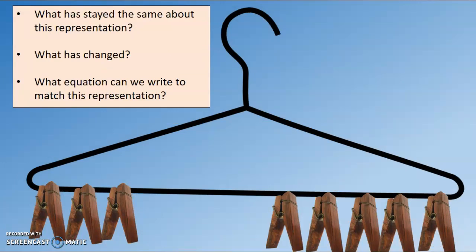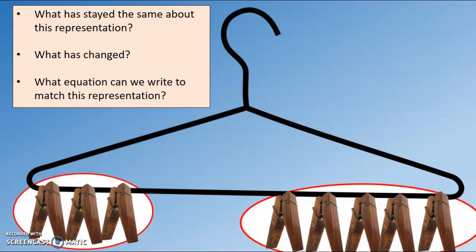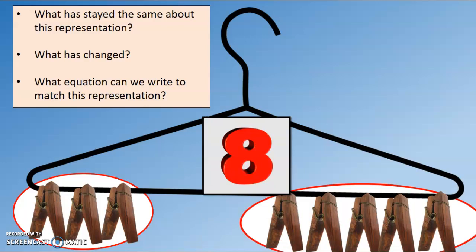So now what has stayed the same about this representation? What do you notice that is the same? Did you say we have two groups, and did you say that we have five in one group and three in another group, just like we had on the slide before? Did you also say that we still have eight total clothespins? Yes, we still have eight altogether. Then what has changed? What is different? Tell your home teacher. Did you say the hanger has been turned around? Fantastic — that's the turnaround fact. So what equation could we write for this representation? Three plus five equals eight. Fantastic — that's the turnaround fact for the picture from before. Excellent job.